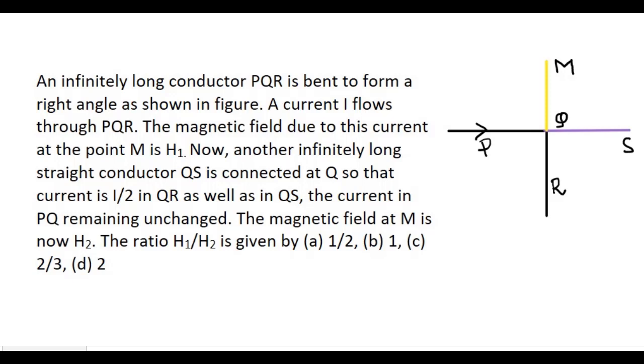An infinitely long conductor PQR is bent to form a right angle as shown in figure. A current I flows through PQR. The magnetic field due to this current at the point M is H1.